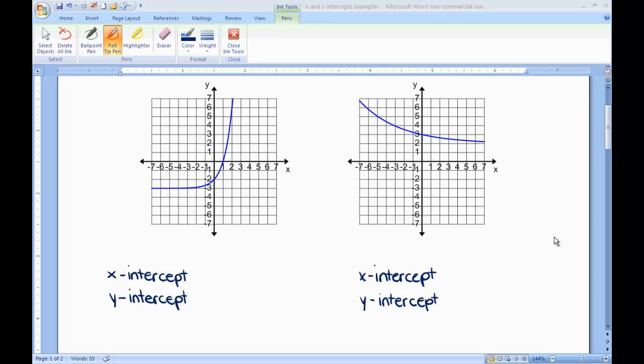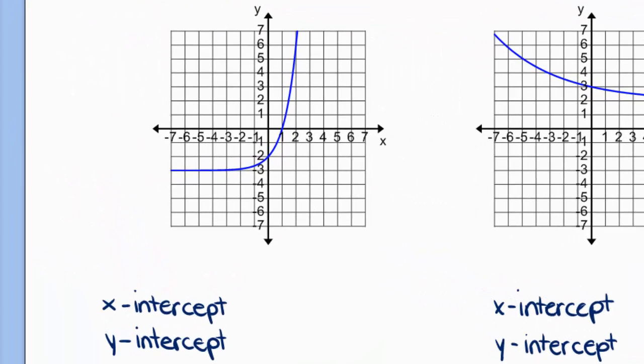First, let's look at the graphs. This first graph, when you're looking for the x and y intercept, you're looking for where the curve crosses the x and y axis.